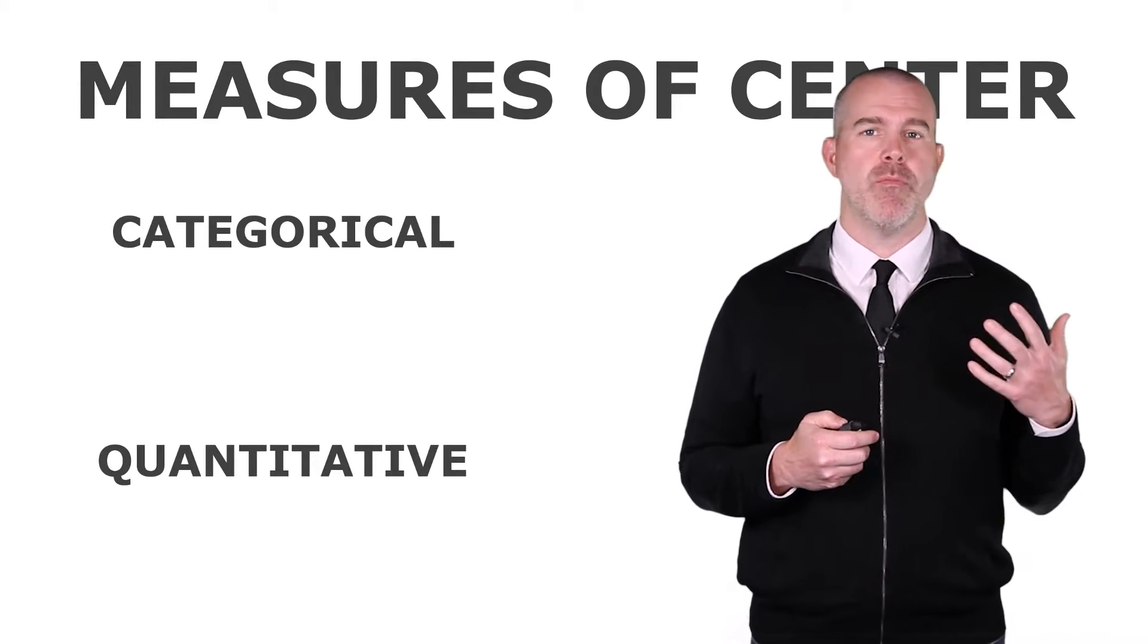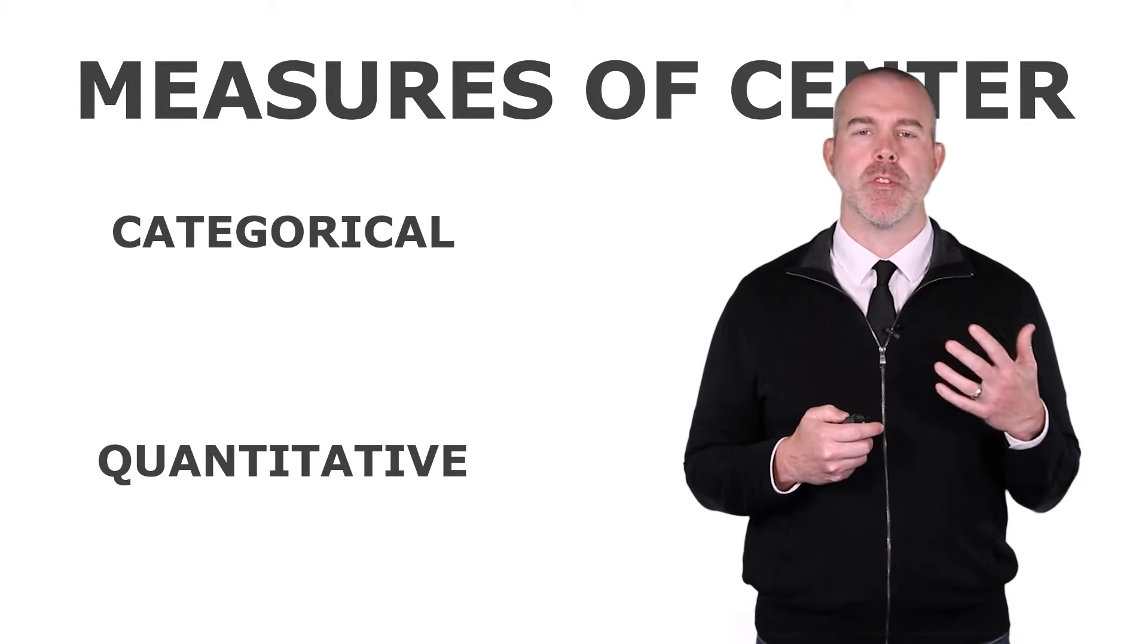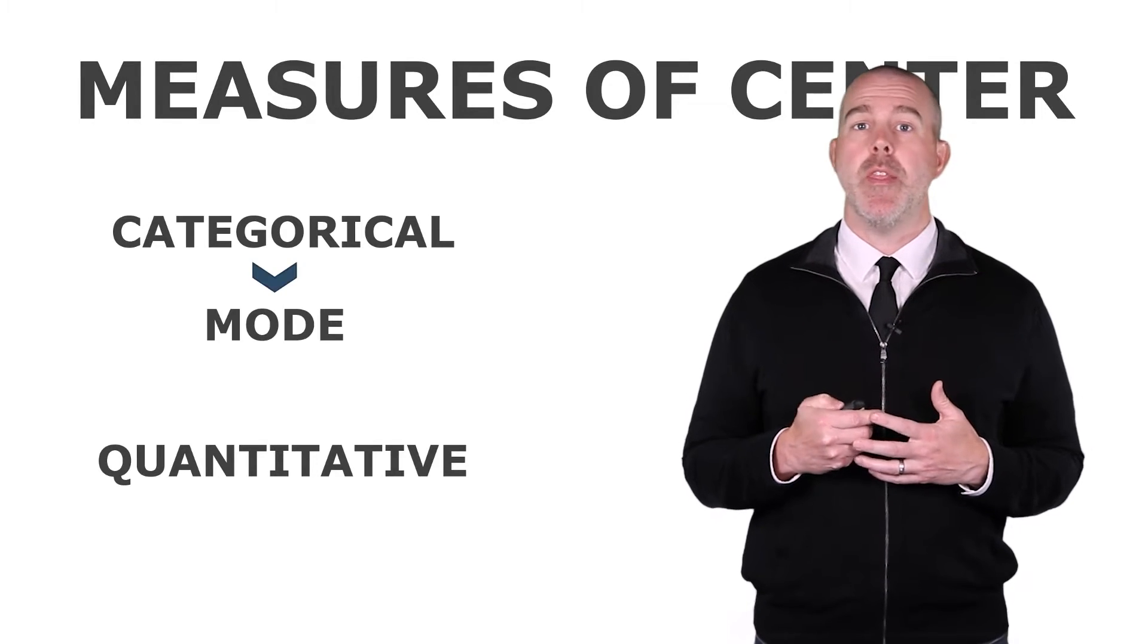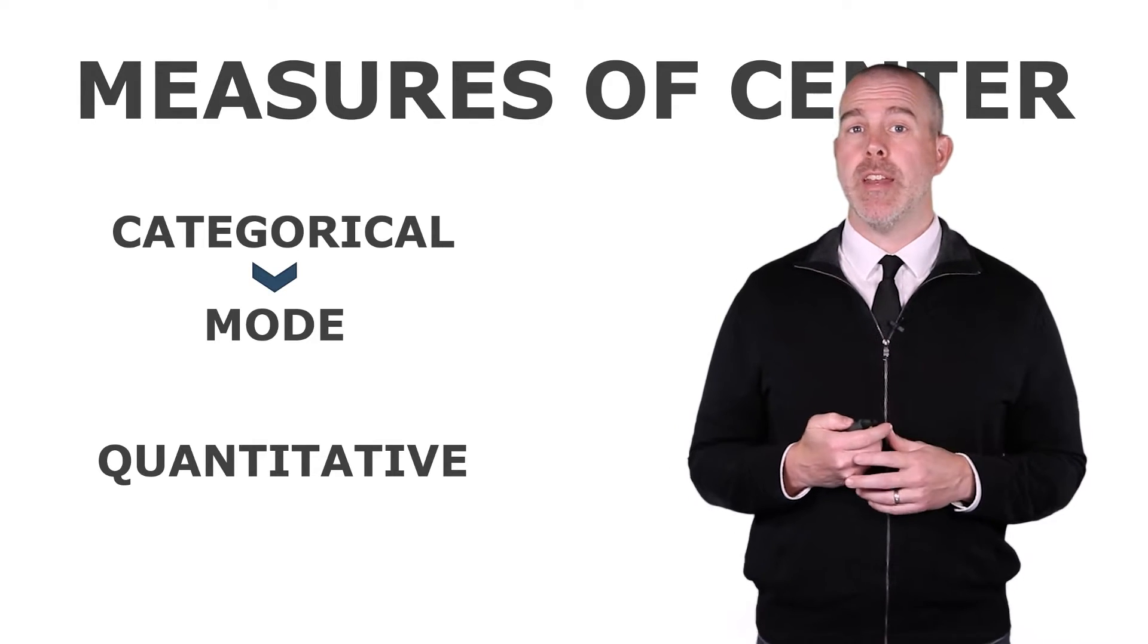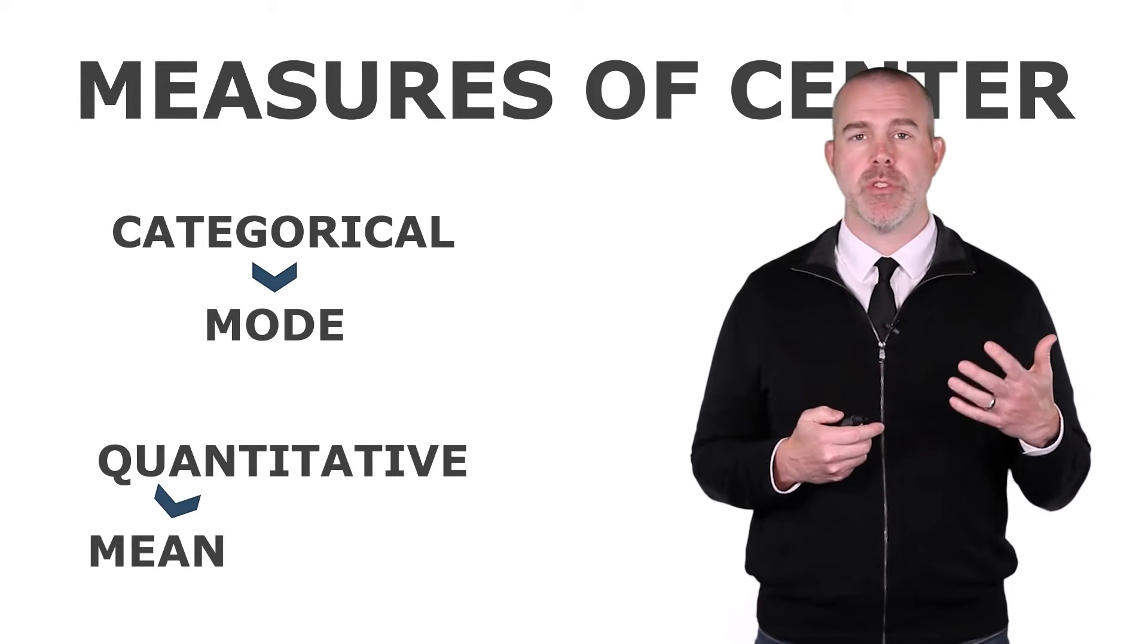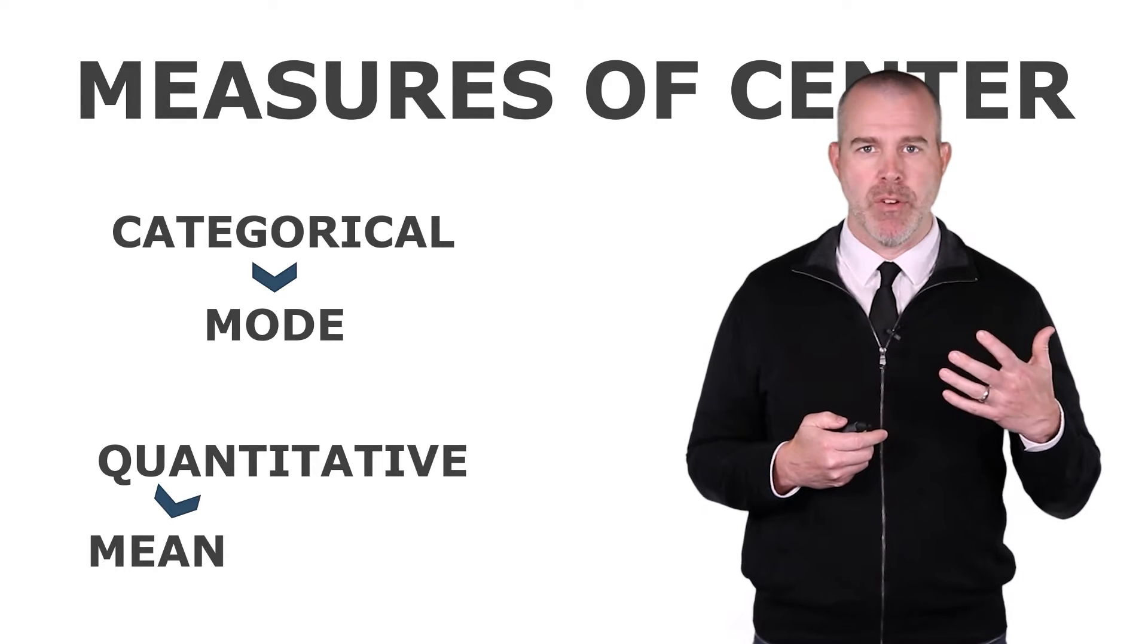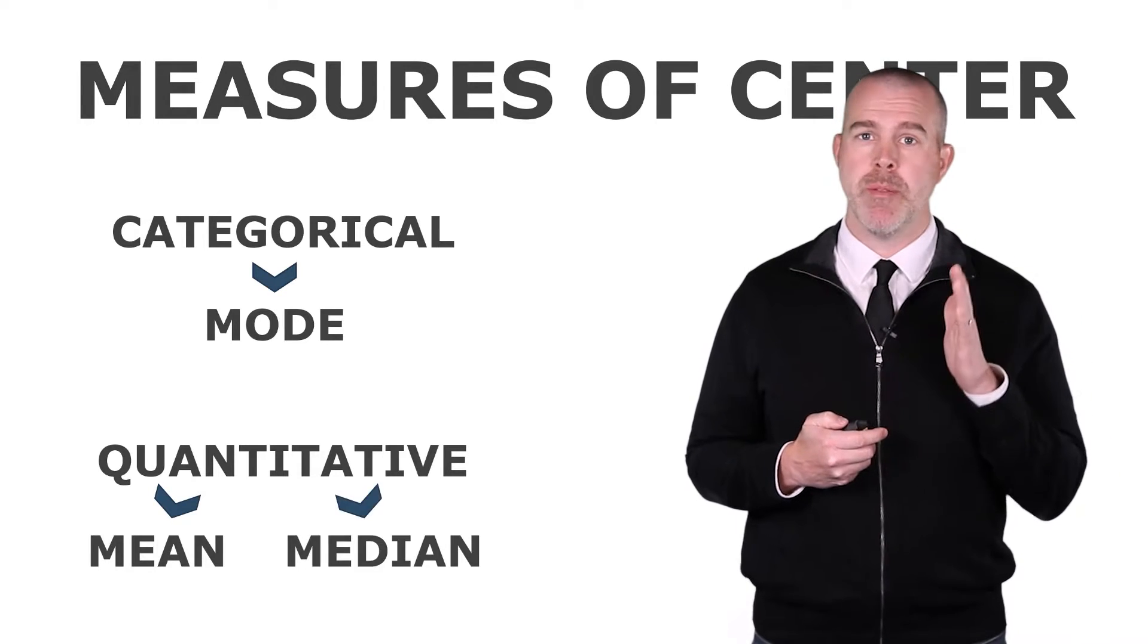When you have a categorical variable, residence area, favorite color, maybe a response to a survey question, then the measure of center is the most common, that's the mode. When you have a quantitative variable, you can either give the mean, which we'll describe specifically, that's like the average, or the median, which is the middle value.